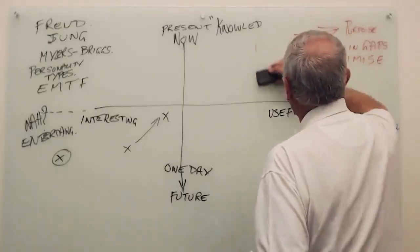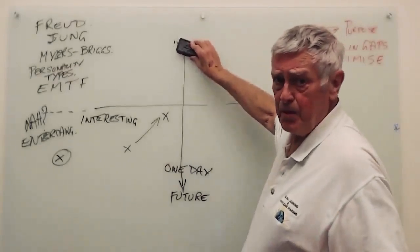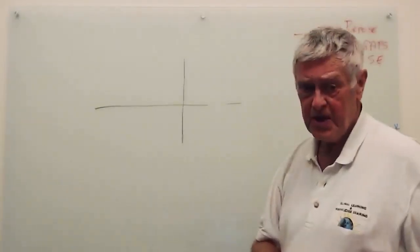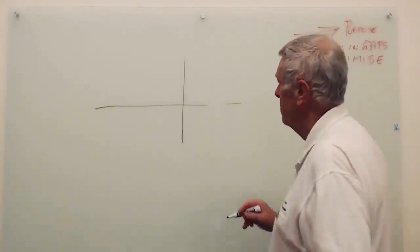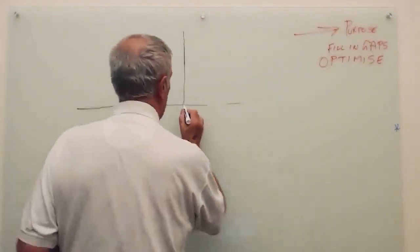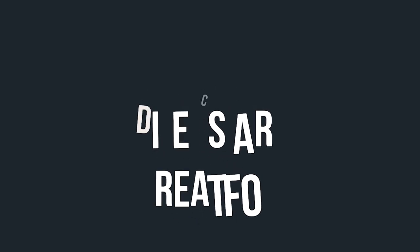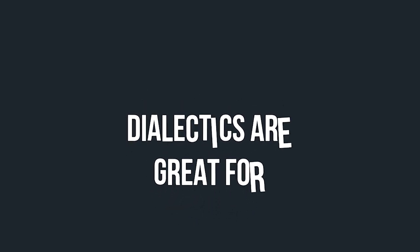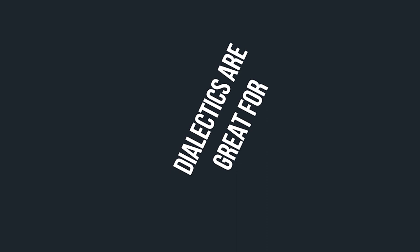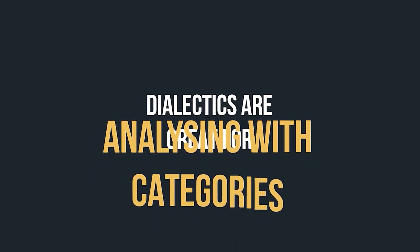Let's move on to another model I use for helping people develop soft skills. It's still in the same shape — we've got one line and another line. Rightly or wrongly, I call these dialectics. And when you've got two items opposed to each other, I call it an opposed dialectic.